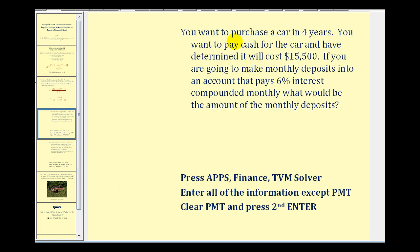For our first example, if you want to purchase a car in four years and pay cash, you've determined it will cost fifteen thousand five hundred dollars. If you're going to make monthly deposits into an account that pays six percent interest compounded monthly, what would be the amount of the monthly deposits?